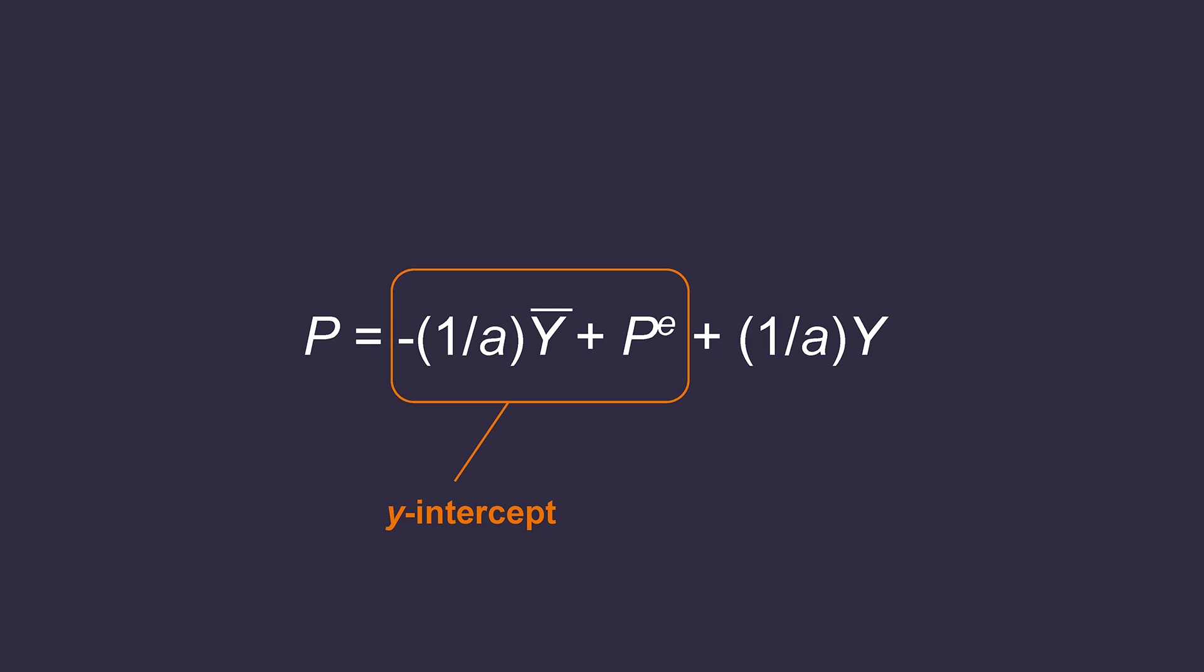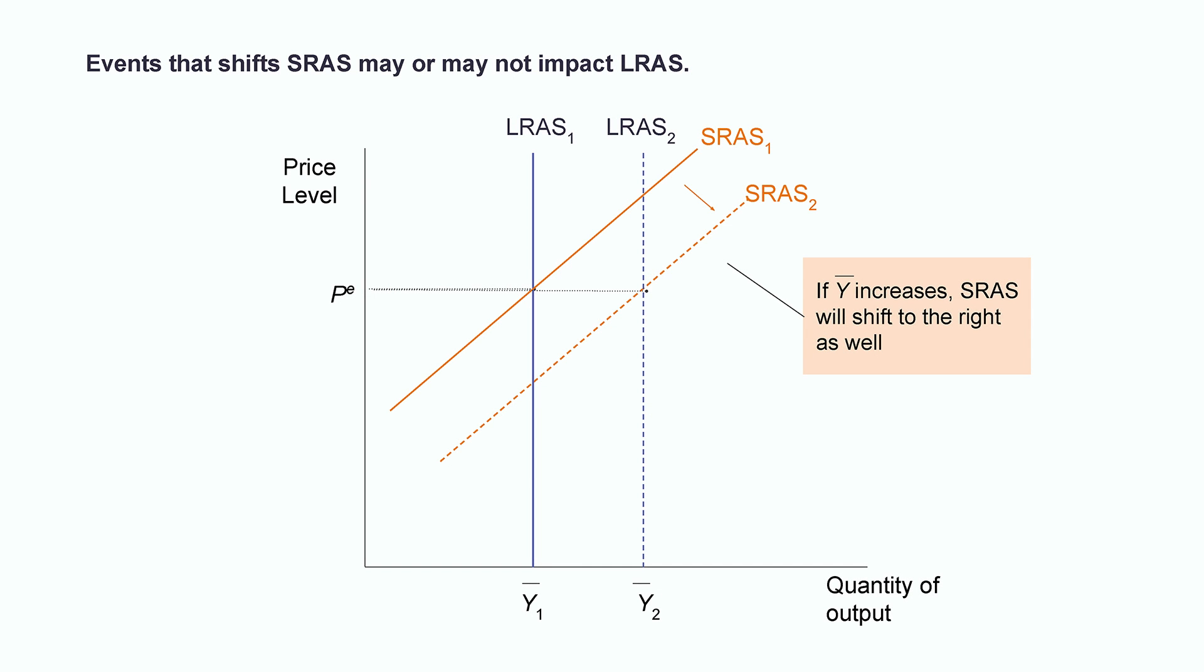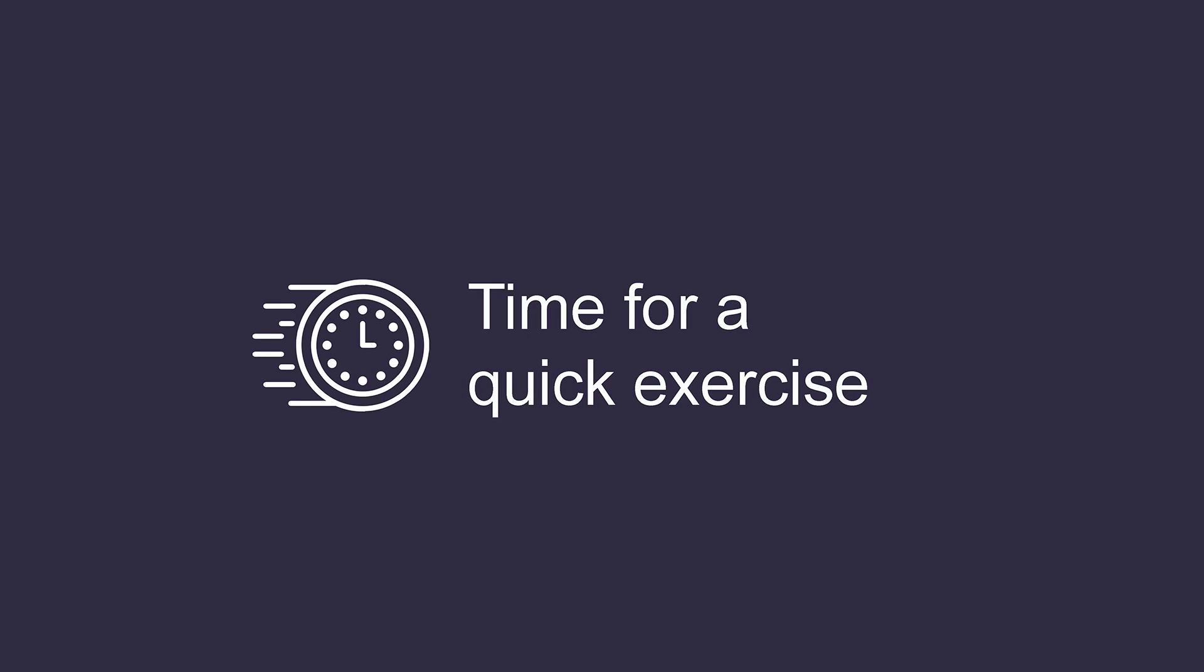So any exogenous event that shifts long run aggregate supply will shift short run aggregate supply. But events that shift short run aggregate supply may or may not impact long run aggregate supply. Let's go through a potential real world example to clear things up.